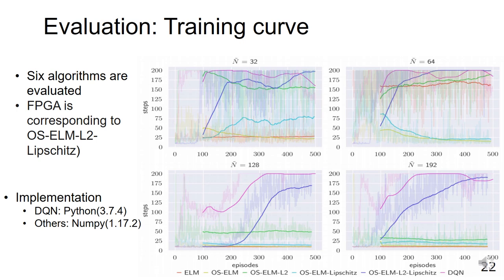The two graphs below show the result when N is 128 and 192. These results are also similar, with only DQN and OS-ELM-L2-Lipschitz acquiring the correct actions. In summary, OS-ELM-L2-Lipschitz can avoid overfitting and learn correct actions thanks to the constraints on both layer α and β.